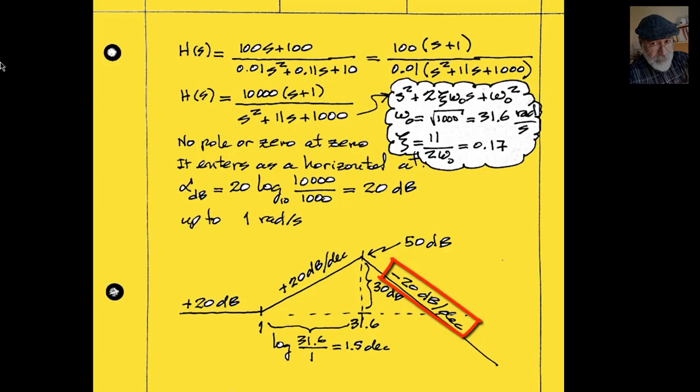Let's find the value of the approximation at the corners. From 1 to 31.6, there are exactly 1 and a half decades. The rate of climb, 20 decibels per decade, adds 1.5 times 20, that is 30 decibels to the curve's value. By the time it reaches the corner of 31.6, its value is 20 plus 30, 50 decibels.